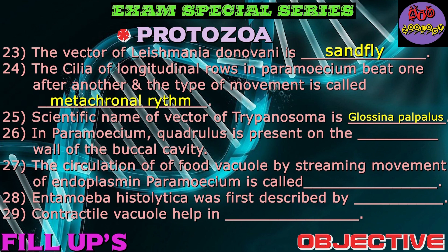Question number twenty-six: Paramecium quadrulus is present on the blank wall of the buccal cavity. Answer: Dorsal. You can answer in the comment box. Because I have dealt with all these questions in the exam special series, those interested can join. Question number twenty-seven: The circulation of food vesicles by streaming movement of endoplasm in Paramecium is called? Answer: Cyclosis.